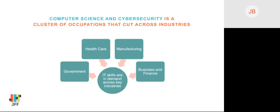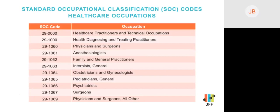Sometimes sectors that are popularly thought of as industries aren't counted that way in the data and don't show up in the NAICS classification system. Cybersecurity is an example, as is petrochemical oil and gas — an industry that shows up often in Texas. Computer science and cybersecurity are a cluster of occupations that cut across industries. Occupations are also organized by a classification system called Standard Occupational Codes, or SOC codes. The two-digit SOC code of 29, for example, describes the broader family of healthcare practitioner and technical occupations, with six-digit codes identifying specific occupations within that family.